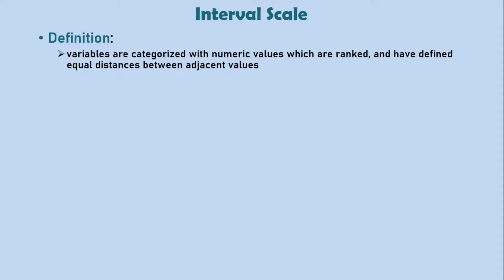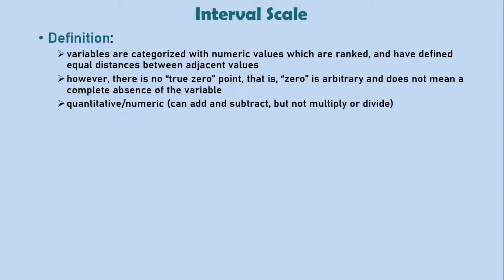On an interval scale of measurement, variables are grouped into categories with numeric values which are ranked and have equal distances from one point to the next. Here is the catch on an interval scale: zero on an interval scale is arbitrary and does not mean a complete absence of the variable. Simply put, zero is part of the values in a variable on an interval scale. Therefore, interval scales can have negative numbers.